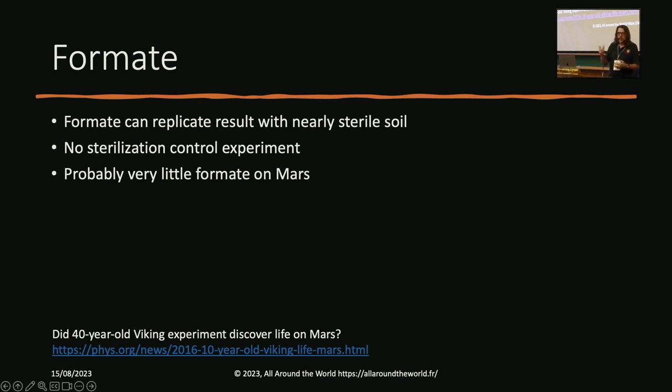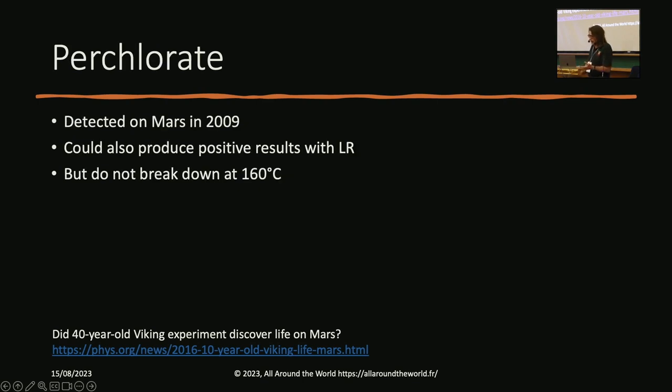Formate was one of the first explanations of how this behavior could be happening abiotically. It can replicate the results with nearly sterile soil. But they didn't have a sterilization control experiment with the formate. And it turns out there's probably very little formate on Mars. So it's unlikely that formate is an explanation for this. There is a lot of perchlorate on Mars. Perchlorate is one of the biggest obstacles we have for visiting Mars. It was detected on Mars back in 2009. It can also produce positive results that the labeled release experiment did. However, those results do not break down at 160 degrees Celsius. So perchlorate does not replicate these results.